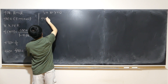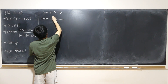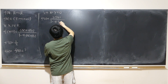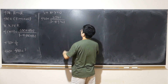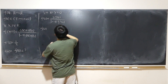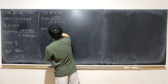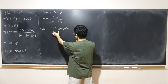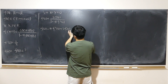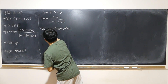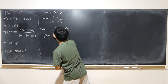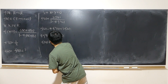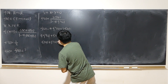Setting x=y=0, we get f(0) equals twice f(0) over 1 minus 4 times f squared of 0. Multiplying through, f(0) times 1 minus 4 f squared(0) equals twice f(0). Moving terms to the other side gives us 4 times f cubed(0) plus f(0) equals 0. Extracting f(0), we get f(0) times the quantity 4 f squared(0) plus 1 equals 0.